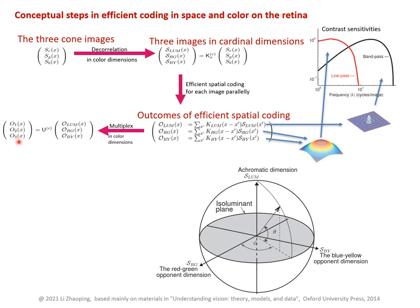From these outputs, you can see that the signal is now both spatially and colour-wise encoded in an efficient manner. These are two examples of the resulting receptive fields as tuned to both space and colour. For example, this one is red centre excitatory and green surround inhibitory, and this one is the other way around.